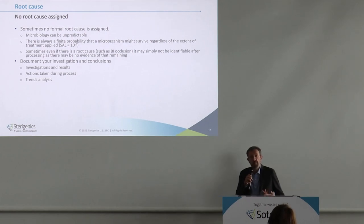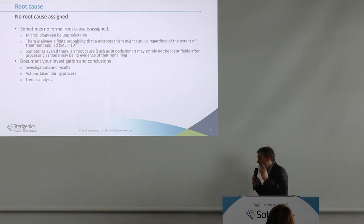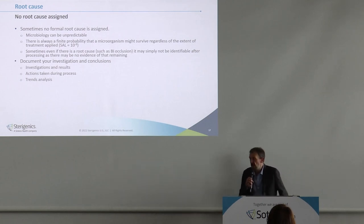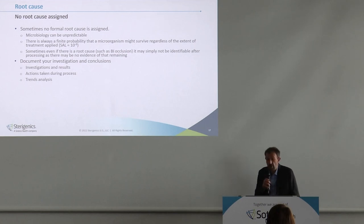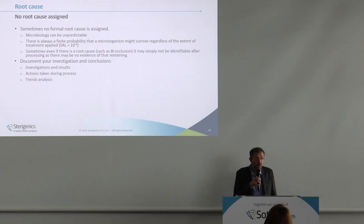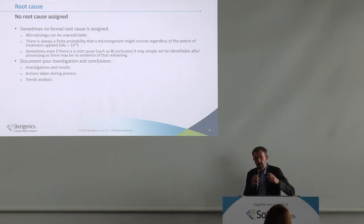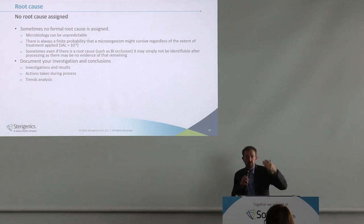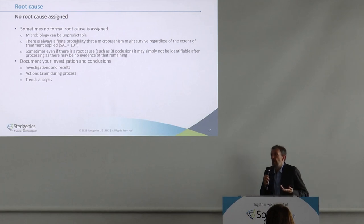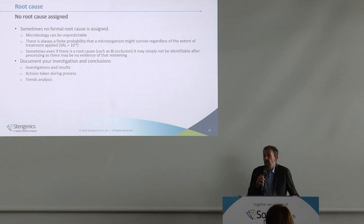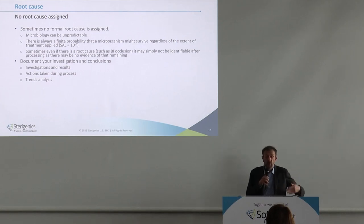Unfortunately, most of the time we may not find any root cause. We're talking about living organisms — they might behave differently, like human beings. We could have situations where we think something happened but cannot prove it. For example, BIs placed in PCD tubing might experience kinking that blocks gas access when vacuum is pulled — we believe it but can't prove it because we can't take pictures during the cycle. If we cannot assign a root cause, we still need to document it, perform trend analysis, and assess the impact.